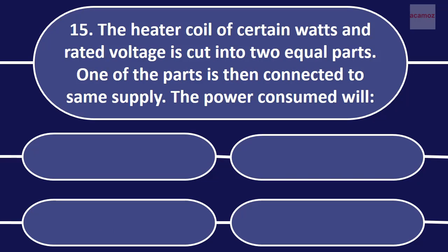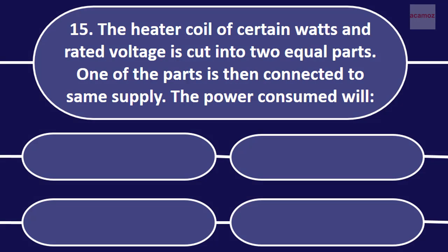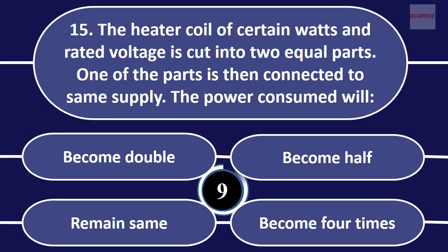The heater coil of a certain watts and rated voltage is cut into two equal parts. One of the parts is then connected to the same supply. The power consumed will be: become double, become half, remain same, become four times.